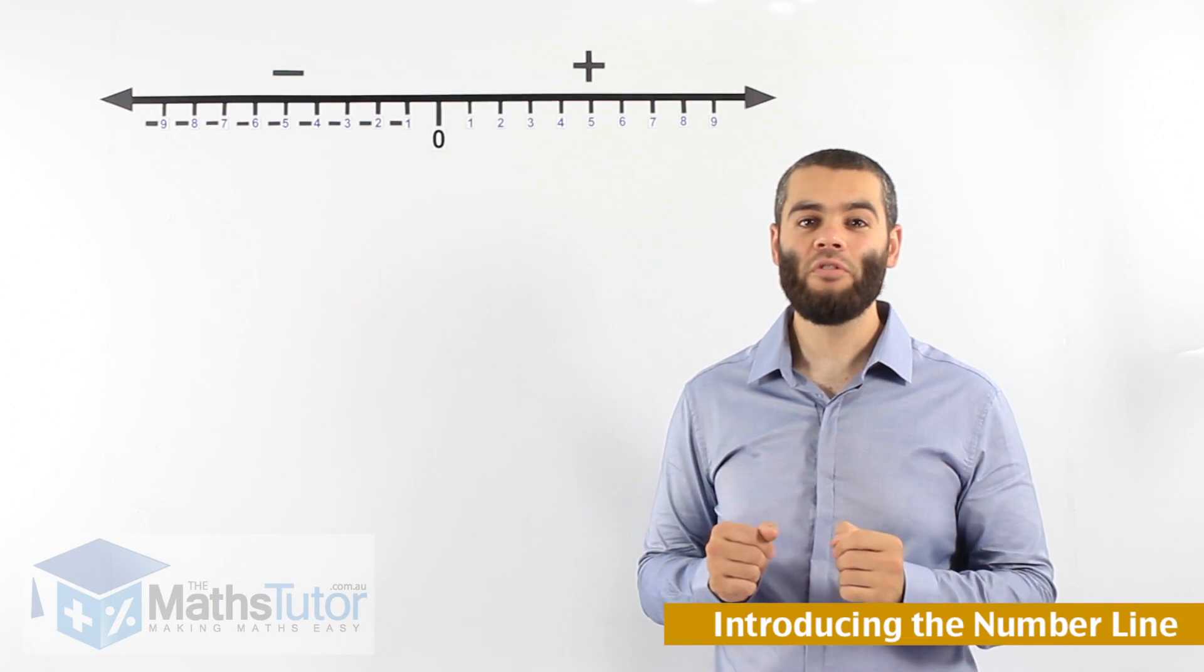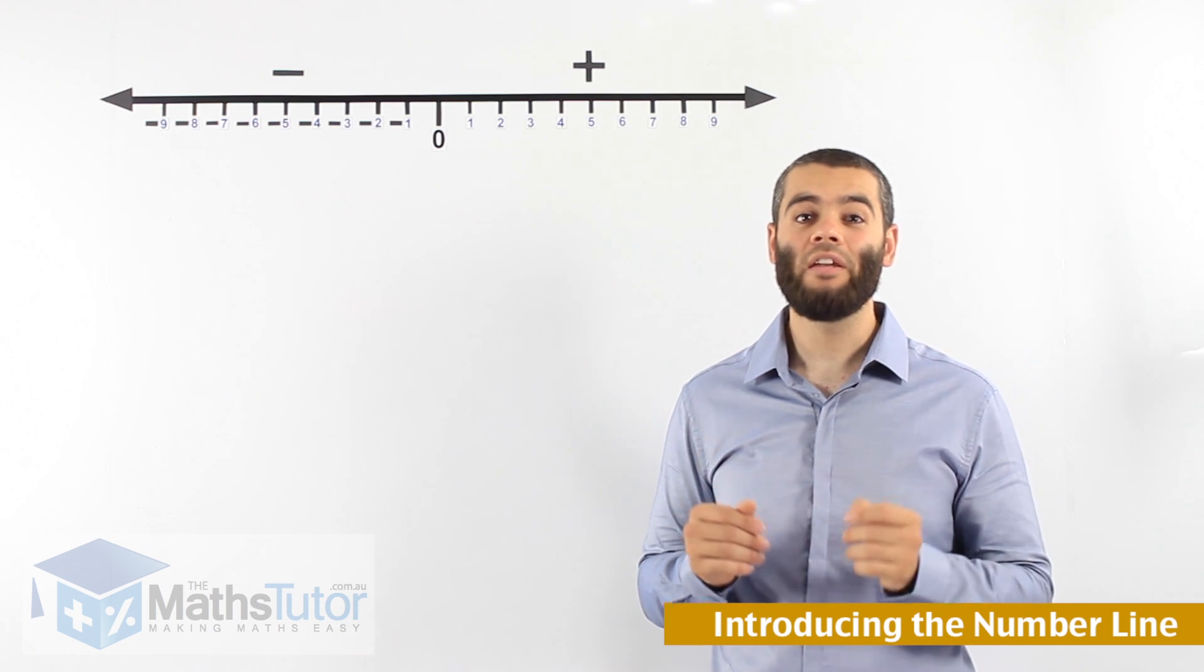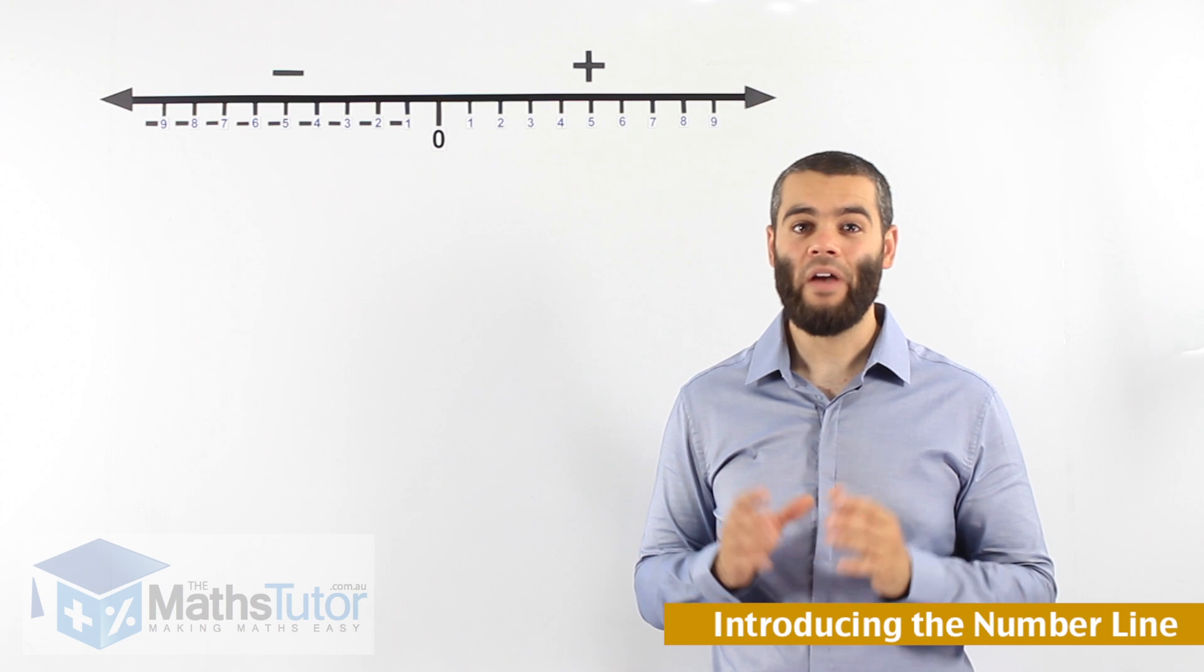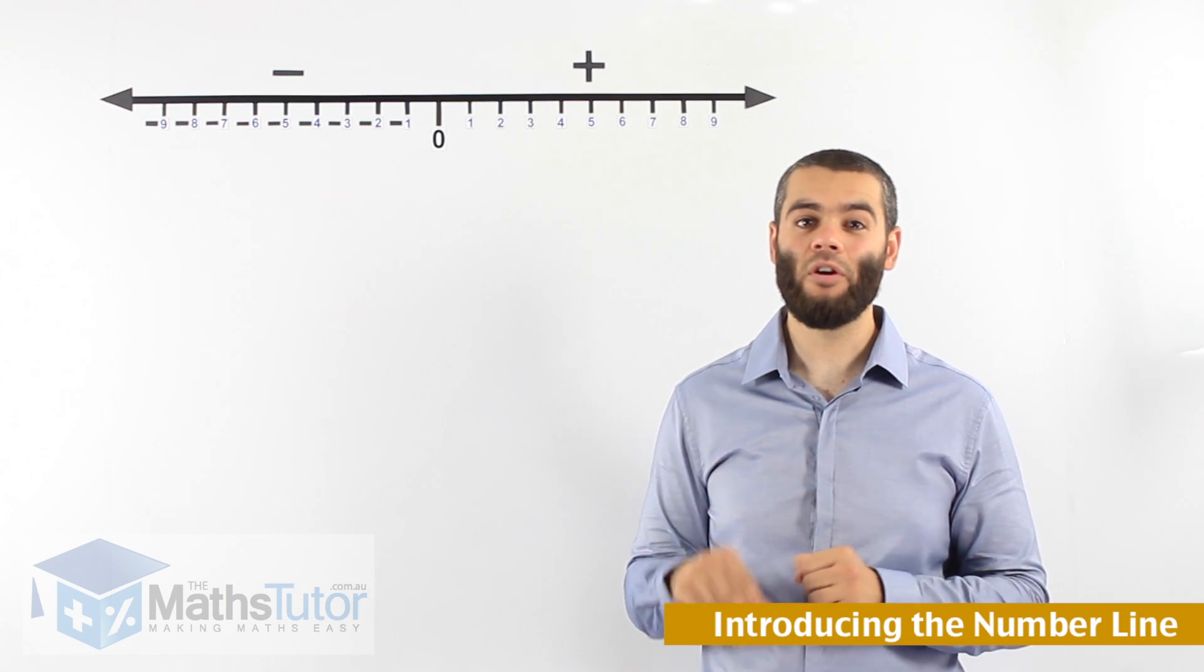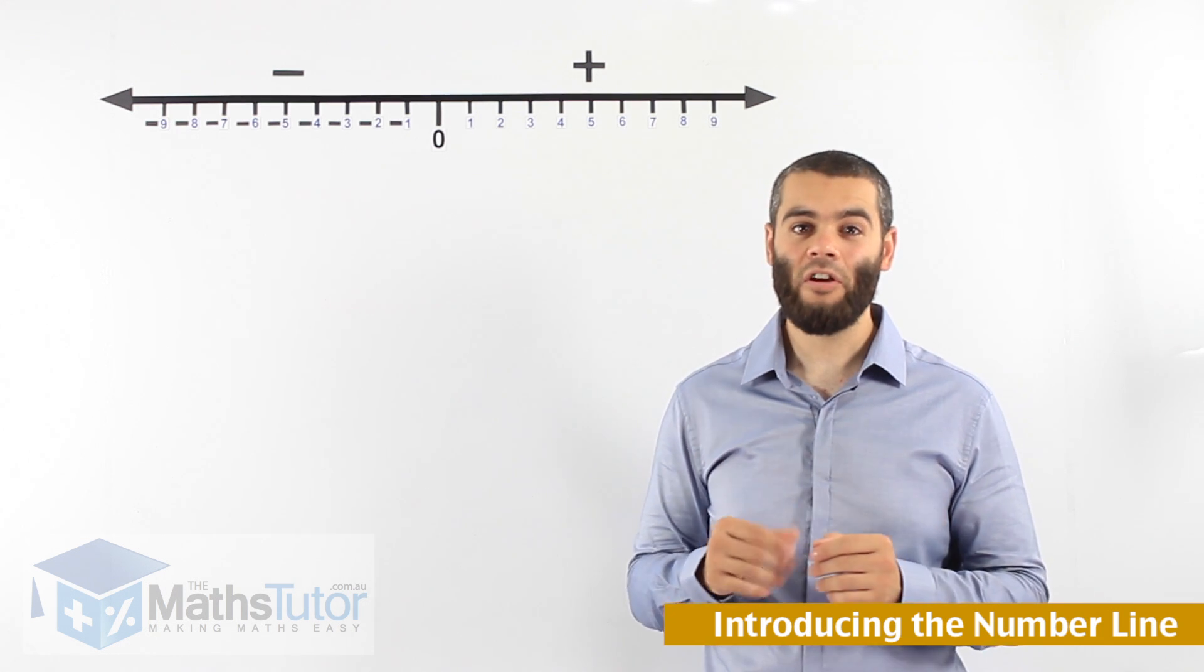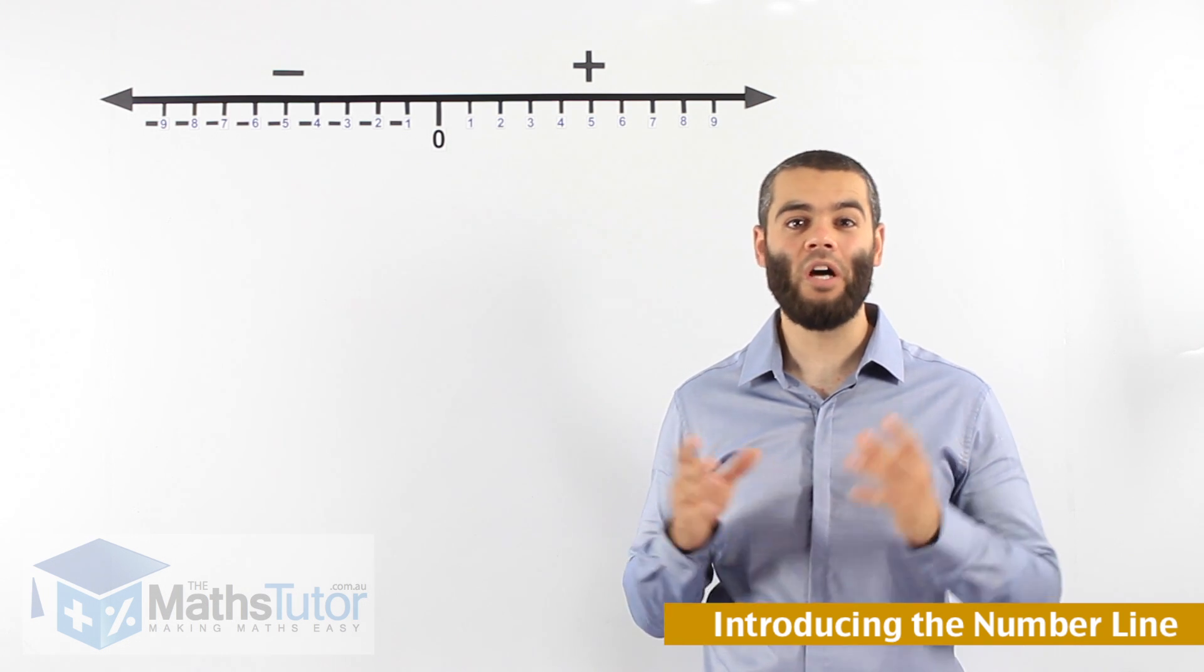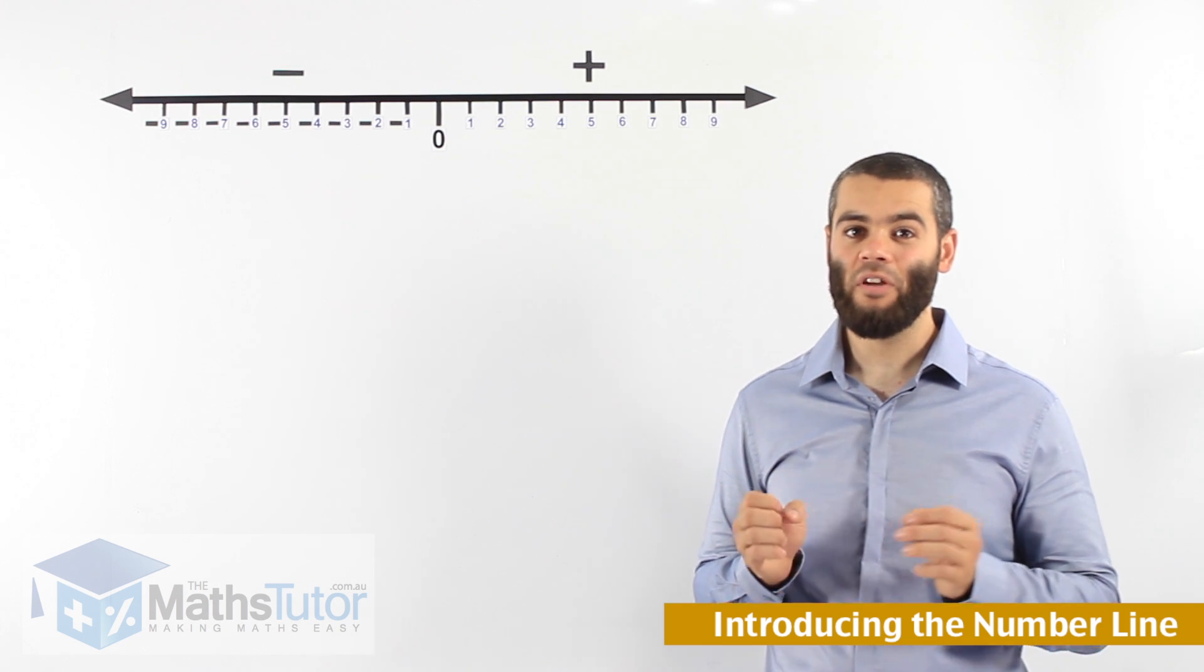Throughout primary school we were introduced and we learned about the number line and we realized that the number line ended at zero. However, in high school we're going to notice that the number line does not end at zero. It actually extends, and to the left hand side of the number line we have what we call directed or negative numbers.